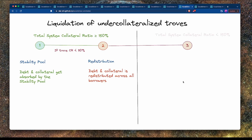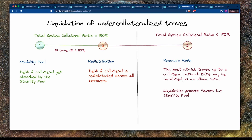There's another scenario where the total system collateral ratio falls below 150%. In this case, the system enters something called recovery mode, which uses a slightly different liquidation mechanism. This will be covered in another screencast. For now, we've looked at the healthy environment where liquidations use the stability pool and redistribution mechanisms.